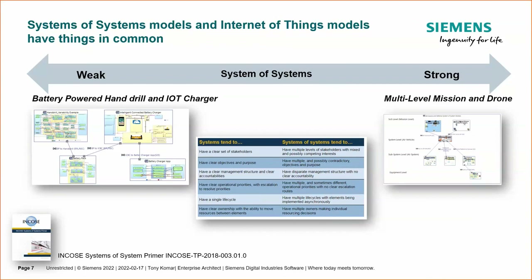What I use to decide weak versus strong comes from the INCOSI handbook: a system has a very clear set of stakeholders, but when you get into a system of systems you may have multiple levels of stakeholders. Looking through the list — clear objectives and purposes, clear management and structure, clear accountability, clear operational priorities, single lifecycle — all these things differ when you get into system of systems mode. Sometimes they're what I call a weak system, on one side of the spectrum; the strong ones are definitely on the right-hand side of this table.